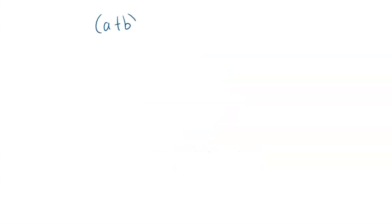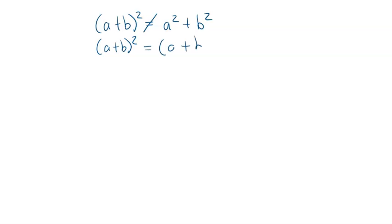The first thing I'm going to look at is this. Some of us, when we go a plus b squared, we think that that is a squared plus b squared. But I'm here to tell you that's actually not the case. If we take a plus b squared and write that out as a plus b times a plus b, we can do FOIL — First, Outside, Inside, Last.